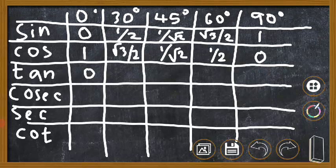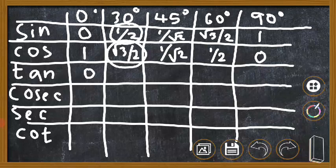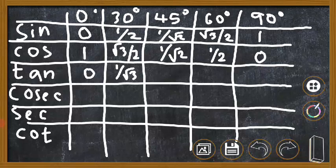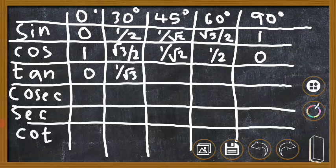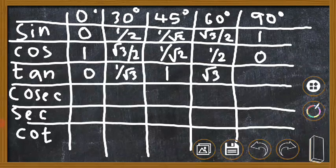For tan 30: (1/2) divided by (√3/2) — the 2's cancel — giving 1/√3. For tan 45: (1/√2) divided by (1/√2) equals 1. For tan 60: (√3/2) divided by (1/2) — the 2's cancel — giving √3.